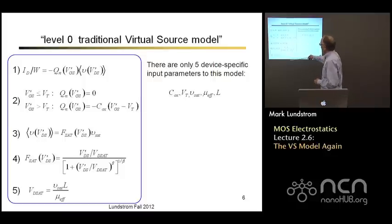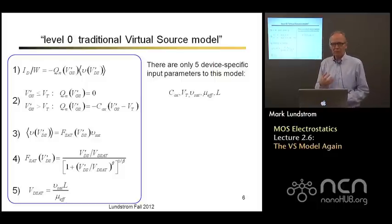So this is a summary of the equations that we developed. Our expression for the current, our expressions for the charge, our expressions for this average velocity in terms of this empirical function, and the critical V_DSAT. And what's nice about this model is that we just have a few, about five simple, physically easy to understand parameters that fit into this model.